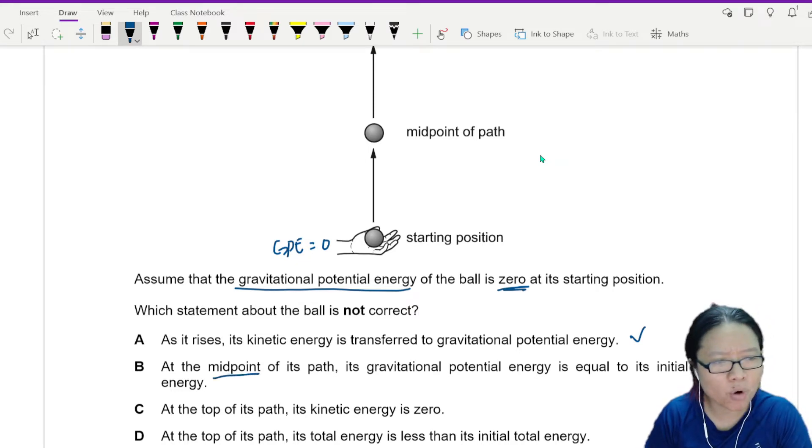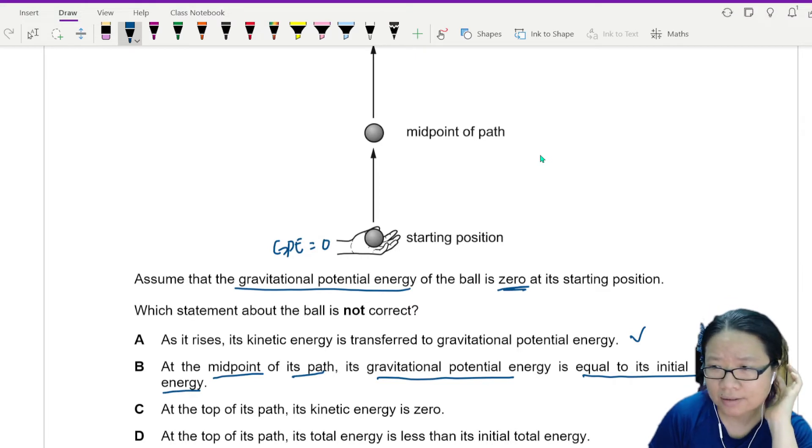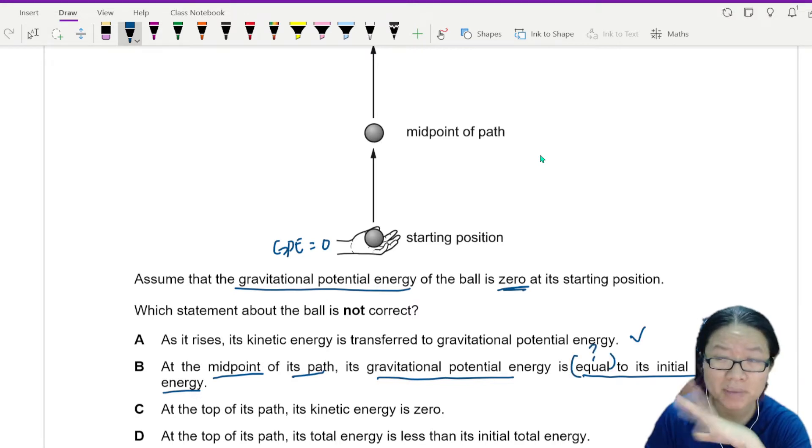At midpoint of the path, the GPE is equal to its initial kinetic energy. This one, a bit sus. Because you want to show that it is equal. Maybe I'll look for it. Maybe I need to prove. But I'll just hang on to it first. I'll just put a question mark.